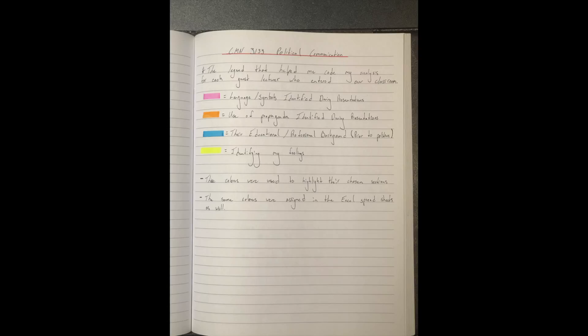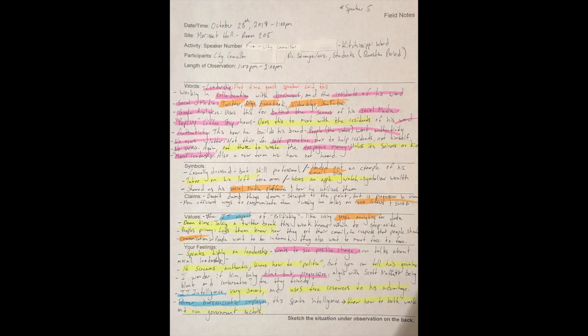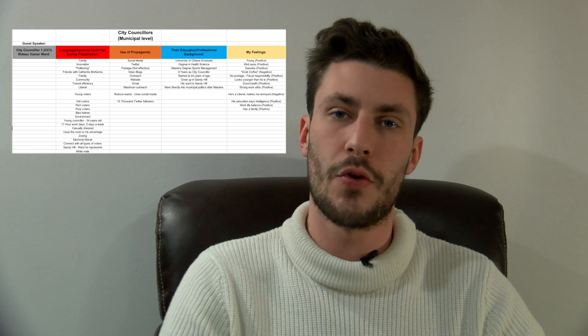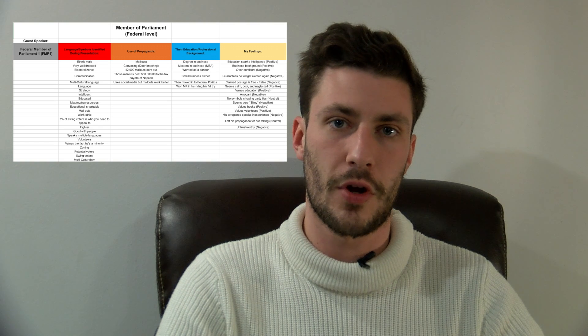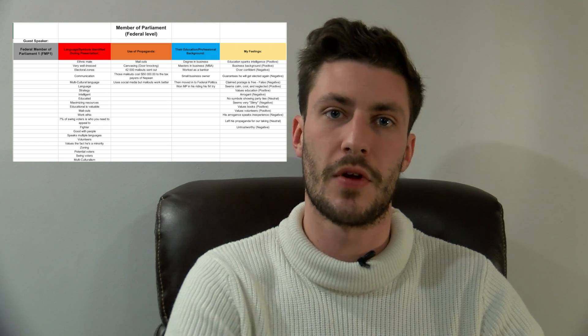To start, I chose four different colored highlighters in order to organize the key words and phrases. Red was used for language and symbols. Orange was used for the use of propaganda in the professional political career. Blue was used for their education and professional background before entering politics. And yellow was used to identify my feelings. I would then condense and review all of that coded data and put it into an Excel spreadsheet using the same colors to keep things organized.